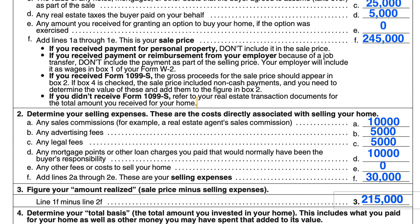If this home qualified under Section 121 — the capital gain exclusion on the sale of your primary home — you might not have any tax at all, which is why many of these transactions aren't even recorded on a Form 1040. Section 121 allows you to exclude gains of up to $250,000, or $500,000 for a married couple filing jointly. At $215,000 realized, we haven't even gotten to the cost of your home yet — this is just the amount you realized from the sale.